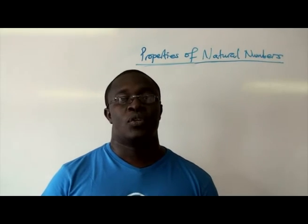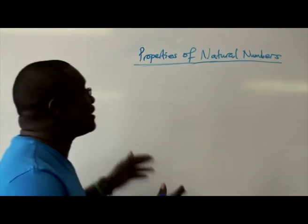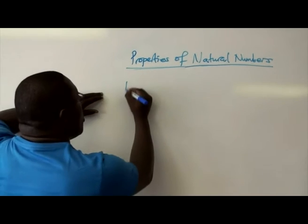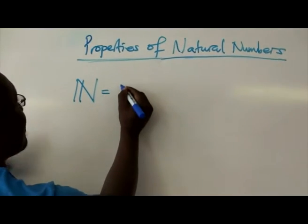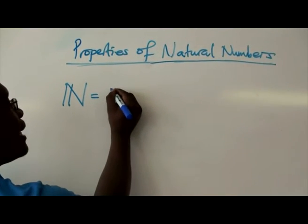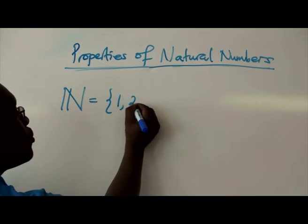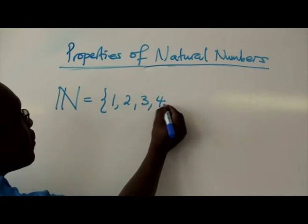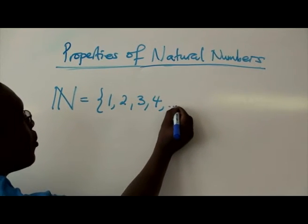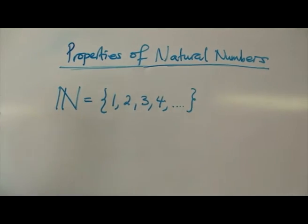So the set of natural numbers is a set of all those numbers that start with 1, 2, 3, 4, going on until infinity.